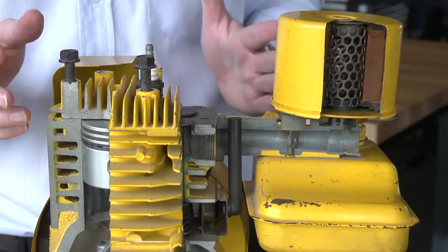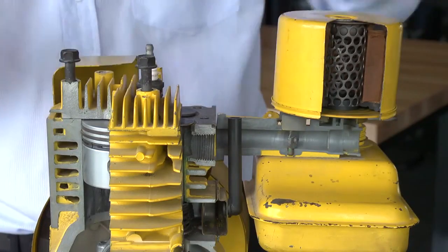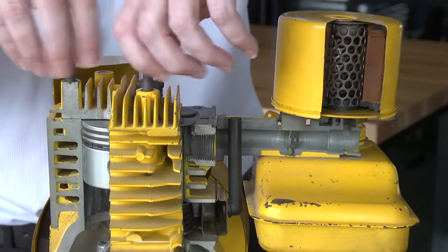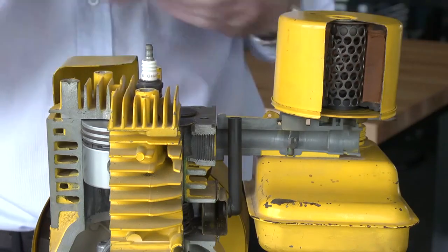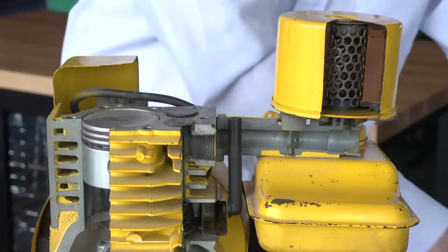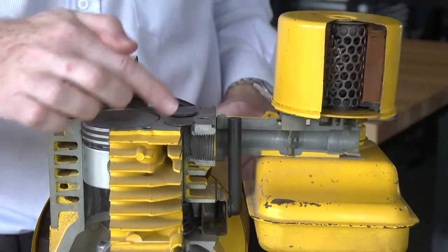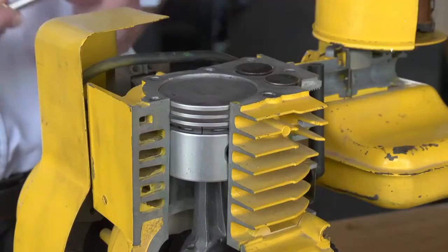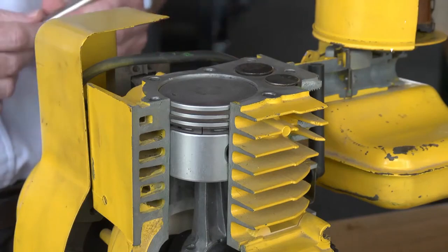Let's now have a look at the four strokes of the engine. To make this simpler, let's remove the head of the engine so that we can see the piston and the valves.